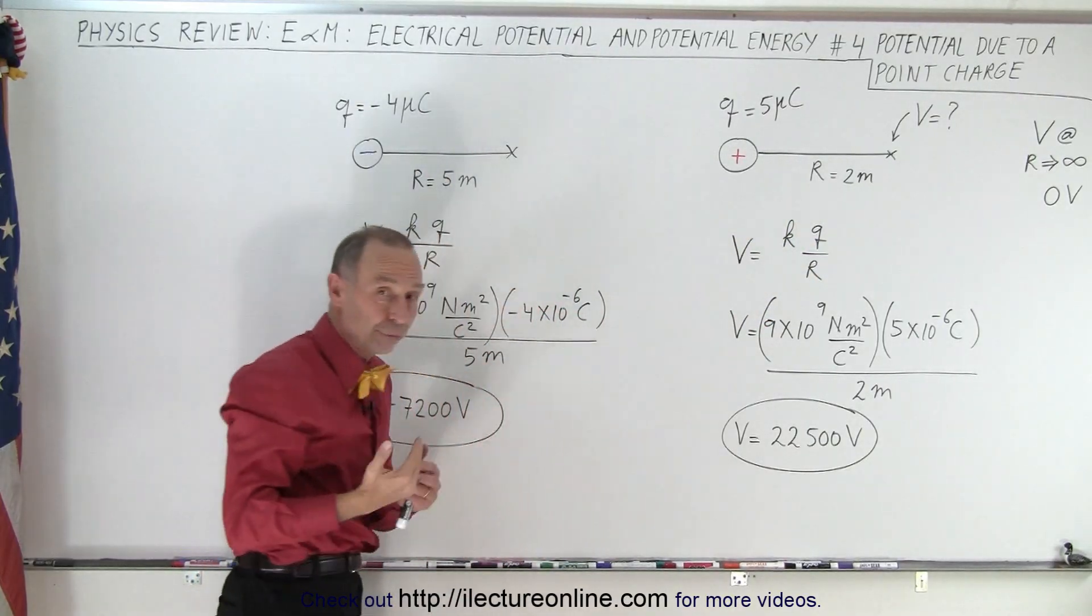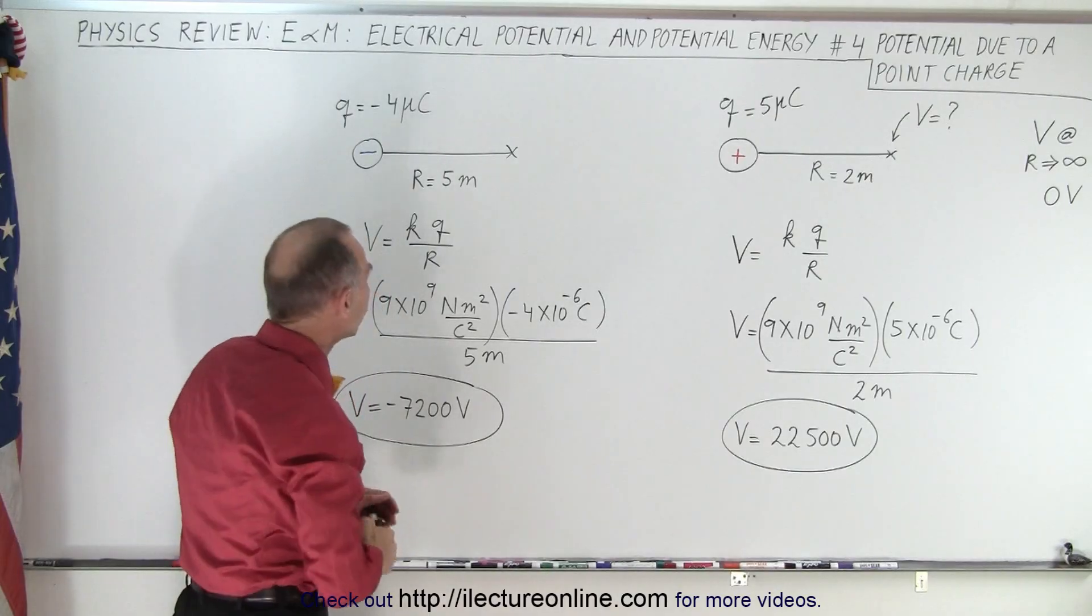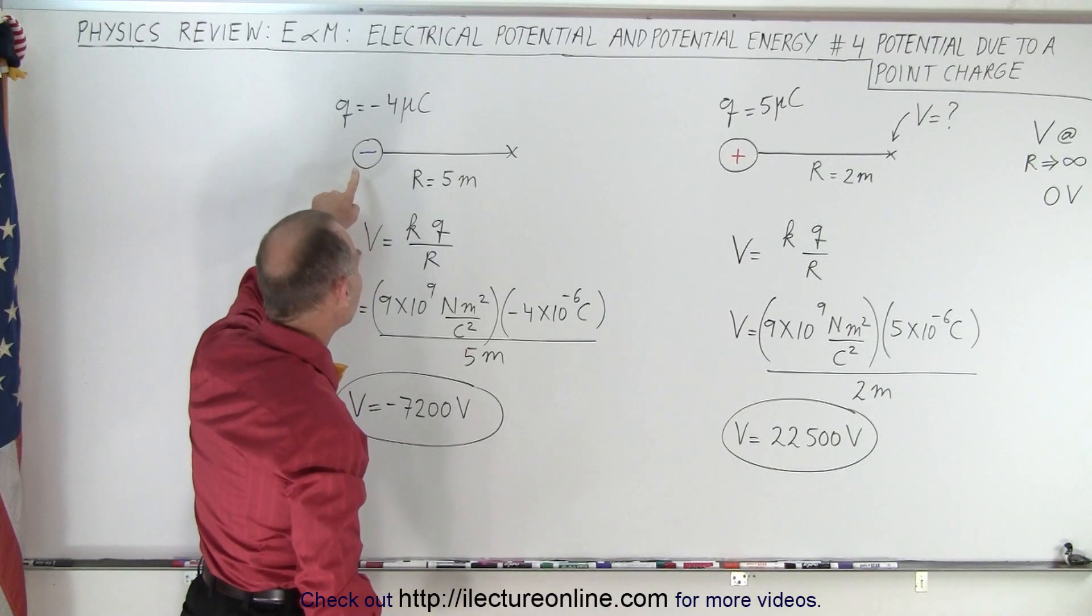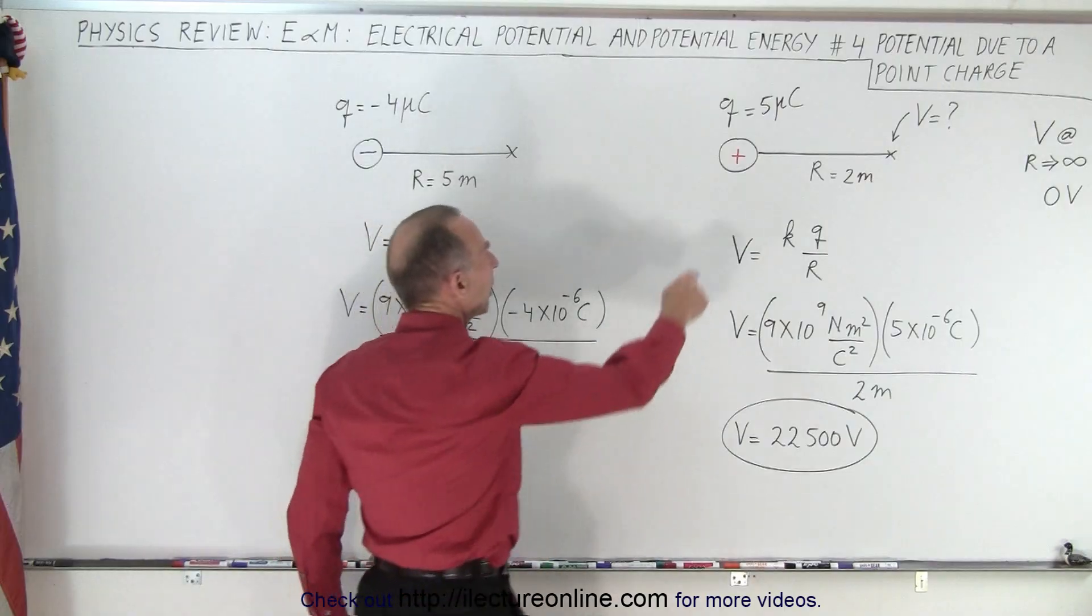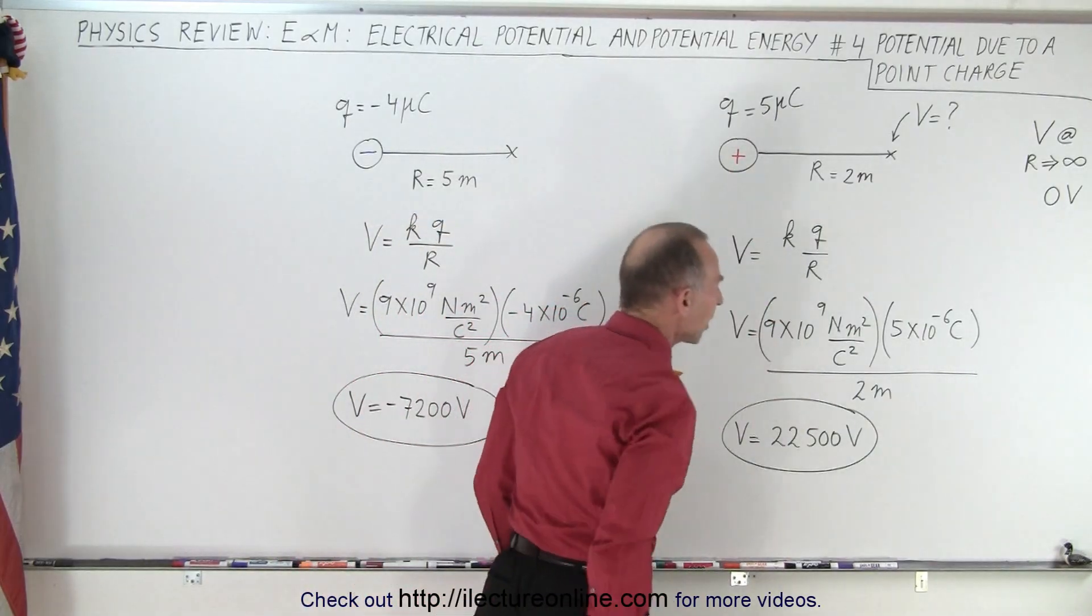the electric potential, or voltage, will actually drop. So near a negative charge, the voltage will be negative, and near a positive charge, the voltage will be positive.